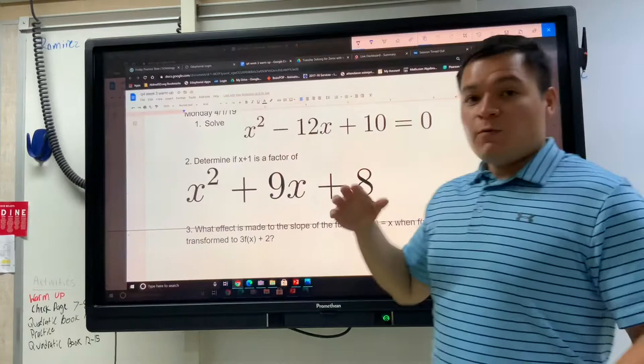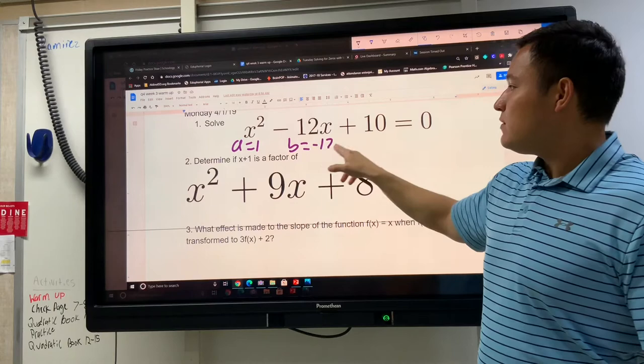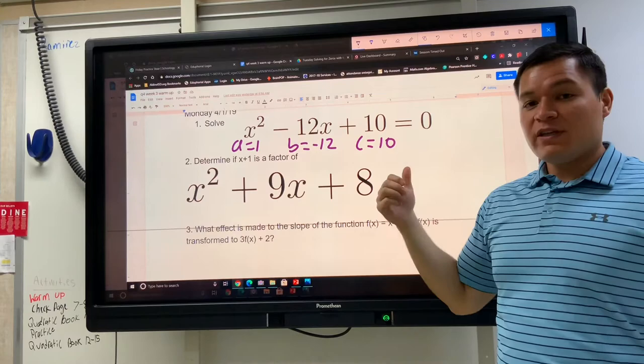And we can use the formula for any quadratic equation as long as it's in standard form. So if we label this one in standard form, A is 1, B is negative 12, C is 10, we should be able to throw these numbers into the formula and get an answer.